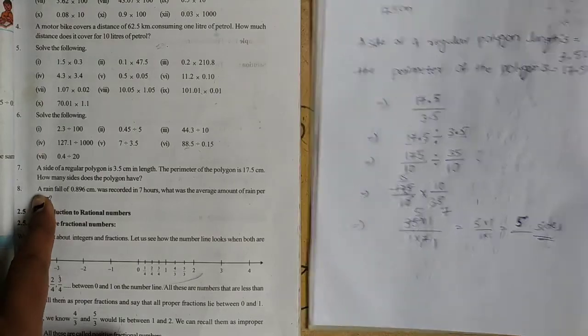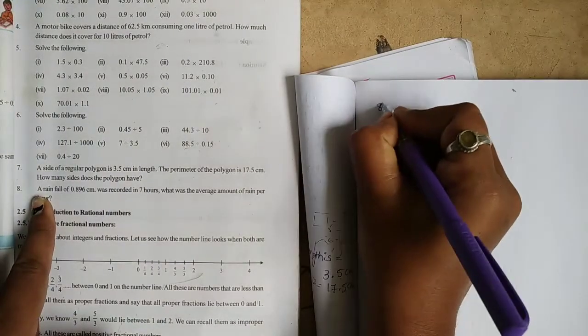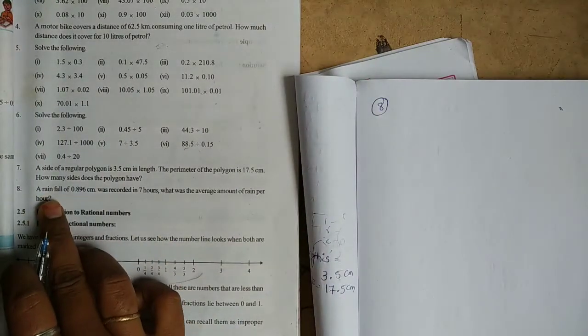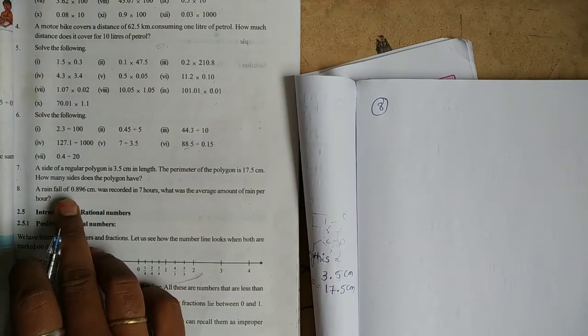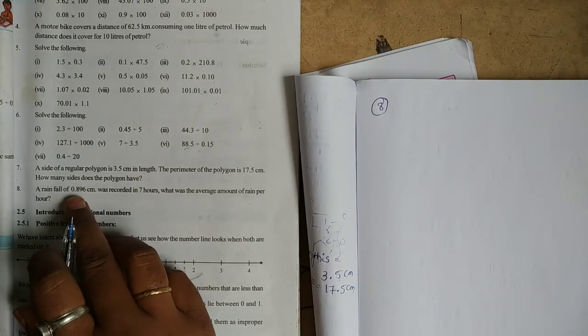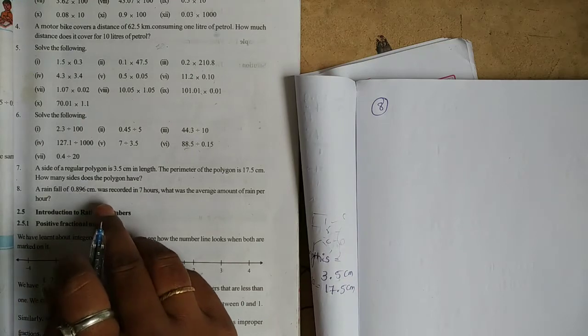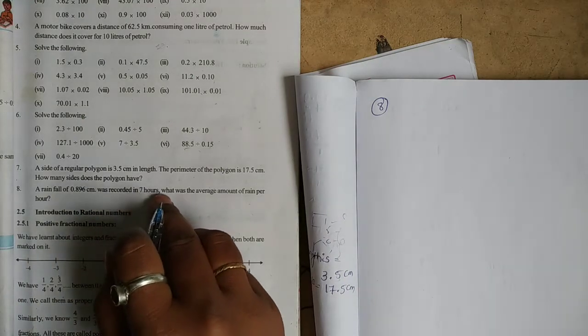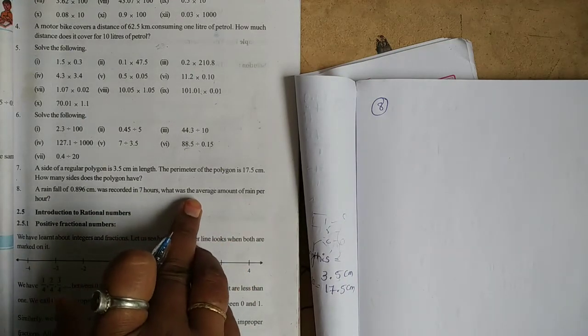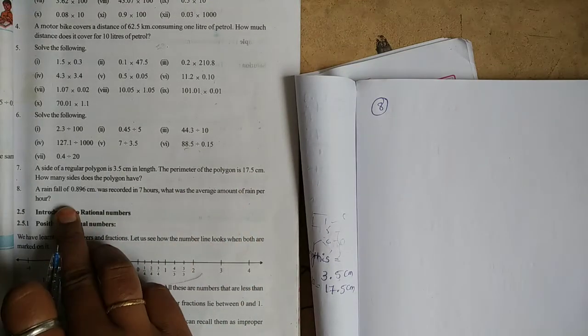Next problem. A rainfall of 0.596 cm was recorded in 7 hours. What was the average amount of rain per hour?